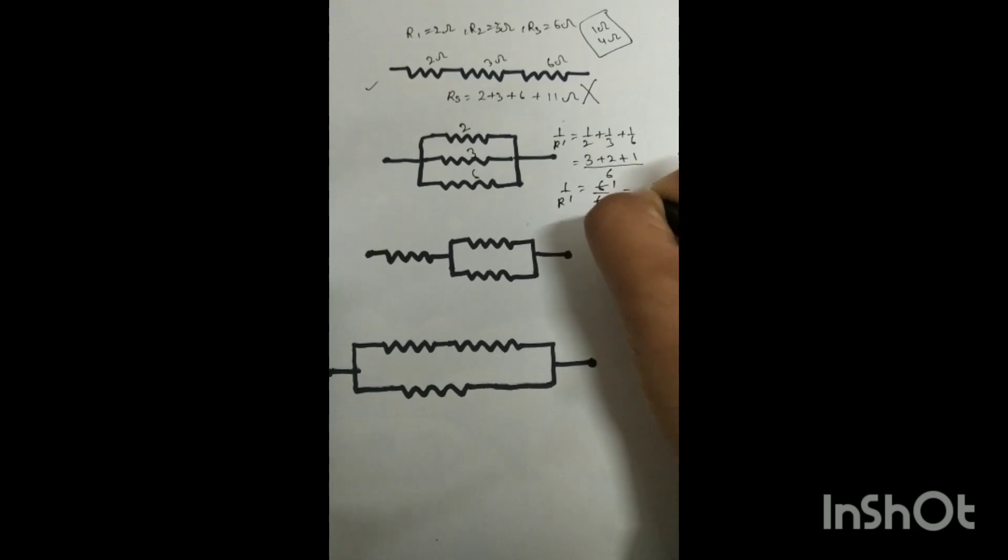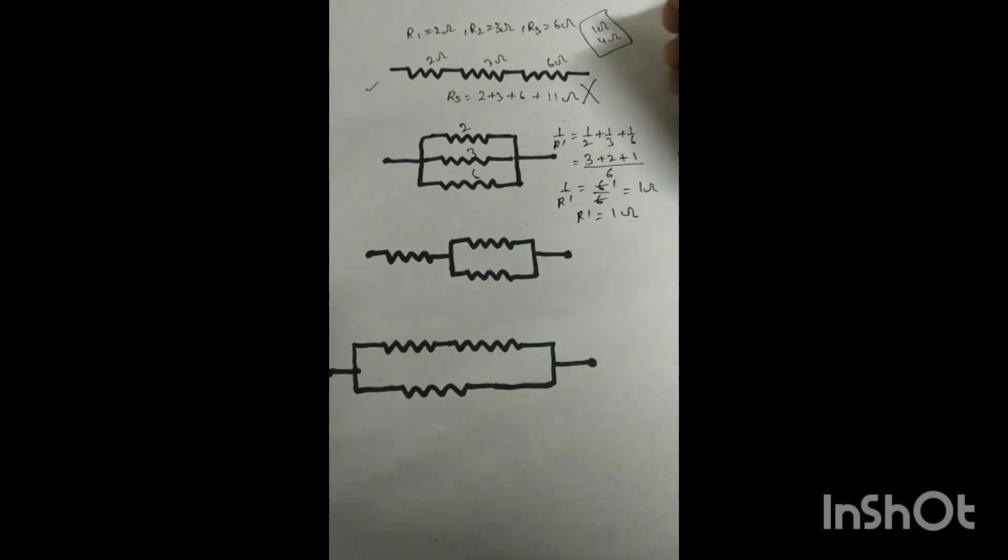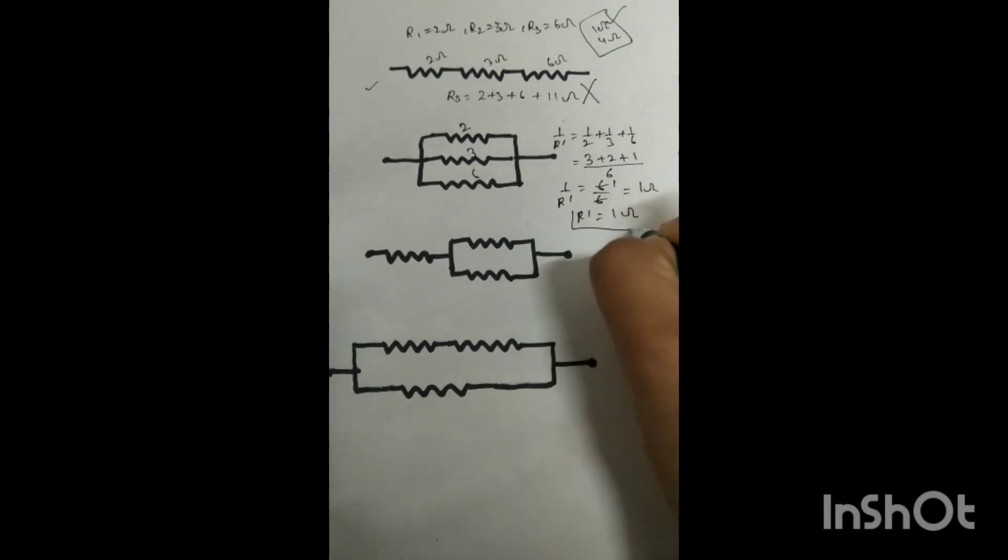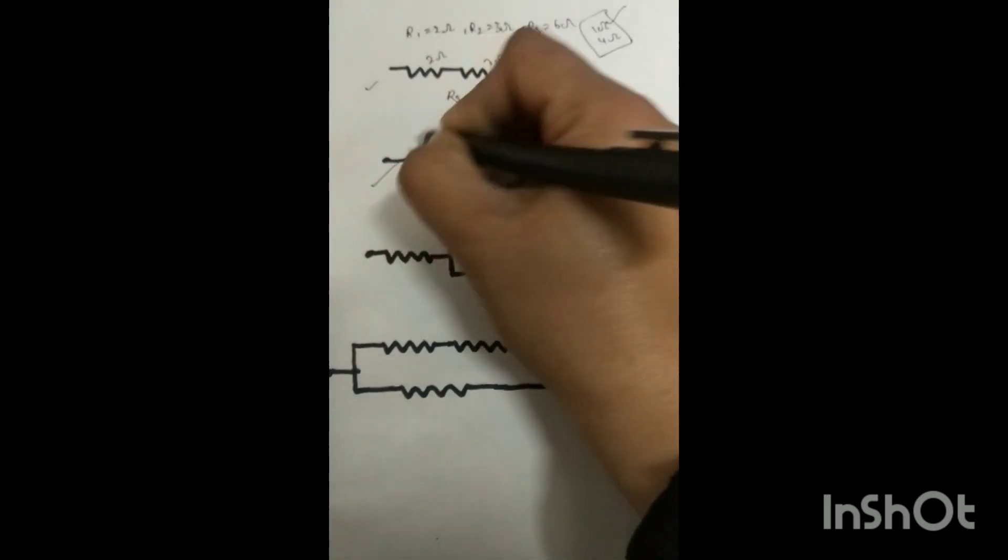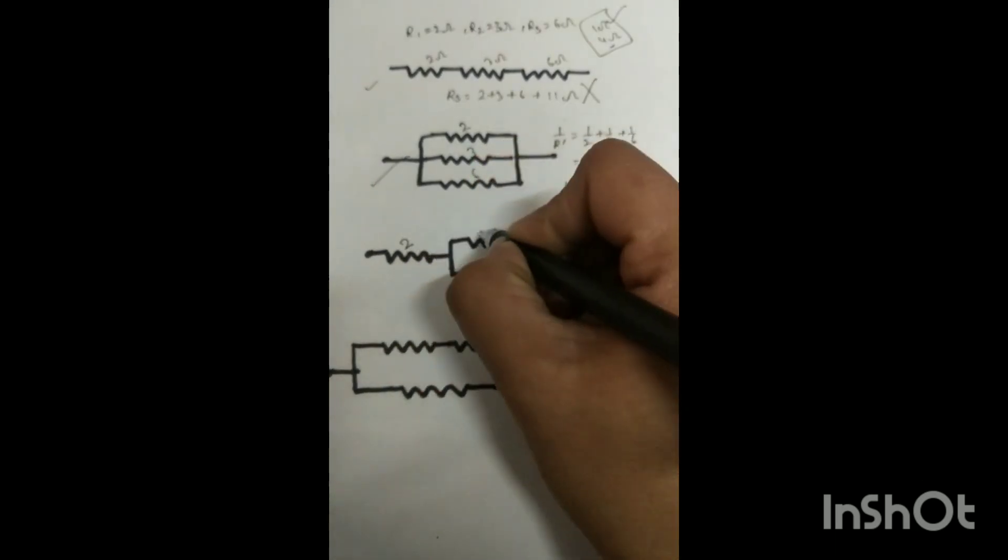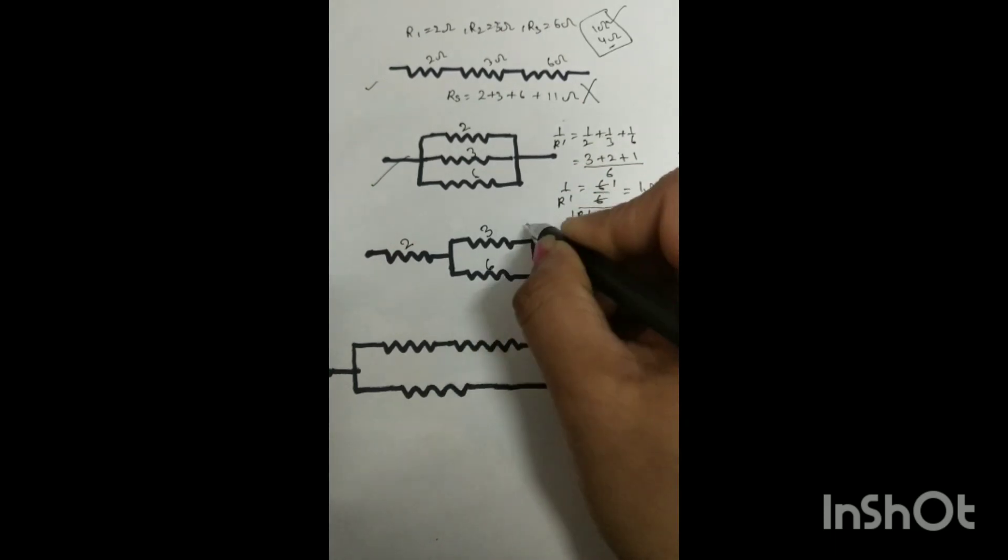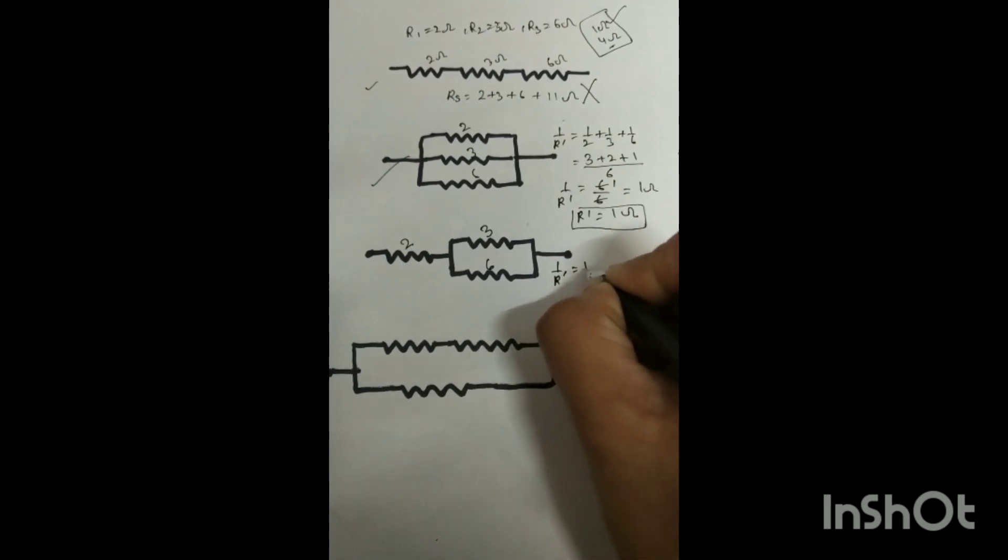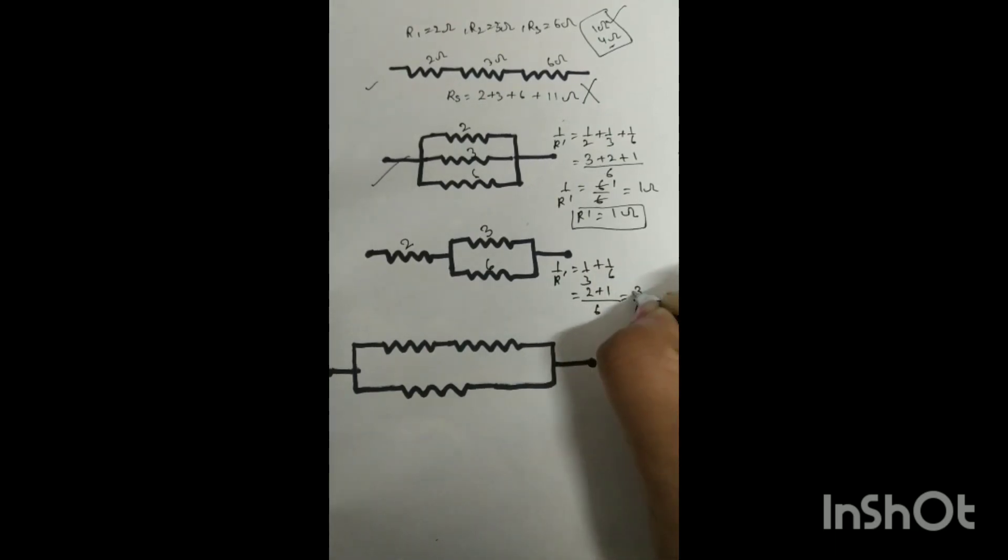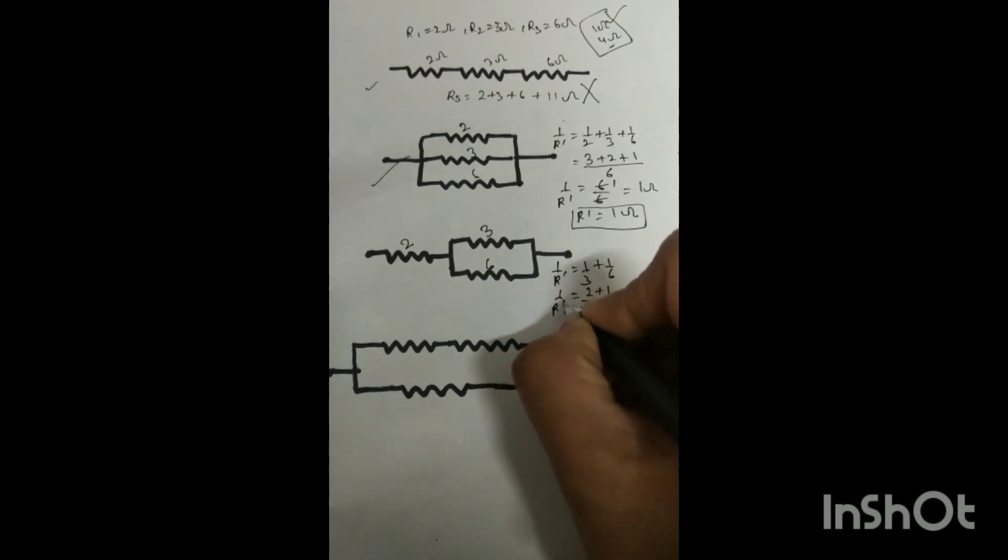We got 1 ohm which we needed. Now for the 1 ohm circuit, we will put values. In this circuit, 3 and 6 ohm are in parallel. First we will solve the parallel: 1/R = 1/3 + 1/6. This equals (2 + 1)/6 = 3/6 = 1/2. So R = 2 ohm.